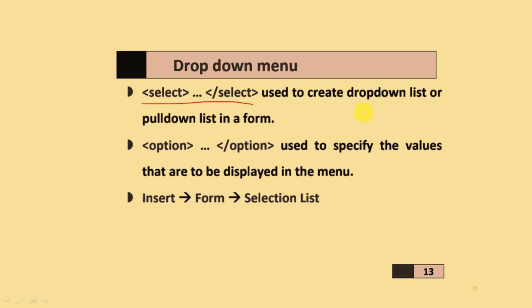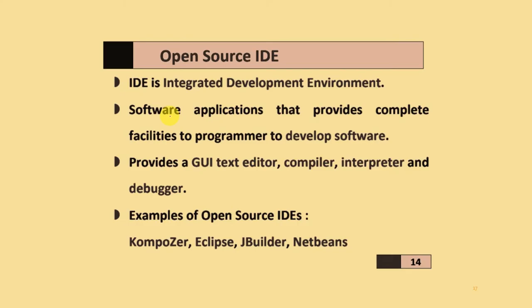To create a drop-down menu, use the select tag. It is used to create a drop-down list or pull-down list. The option tag is used to specify the values to be displayed in the menu. To insert it in Composer, go to Insert > Form > Selection List.